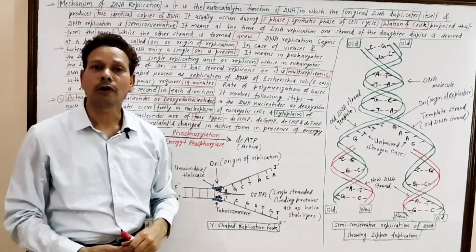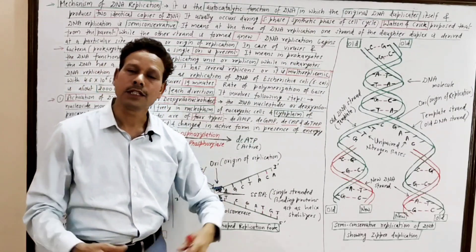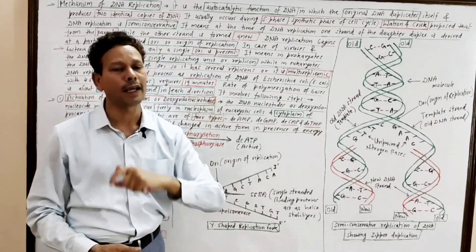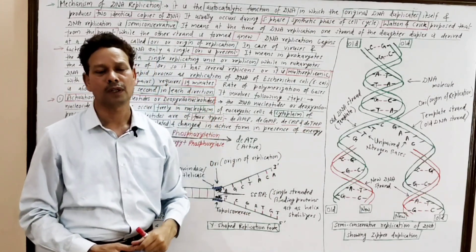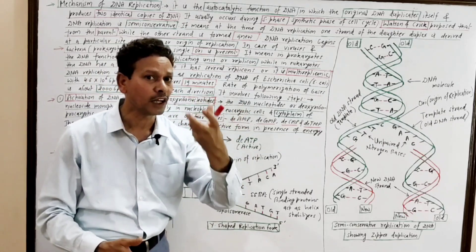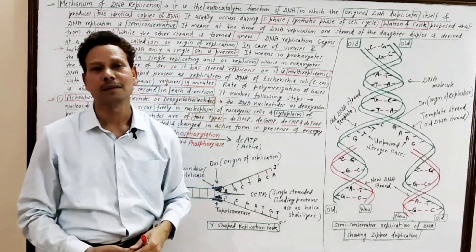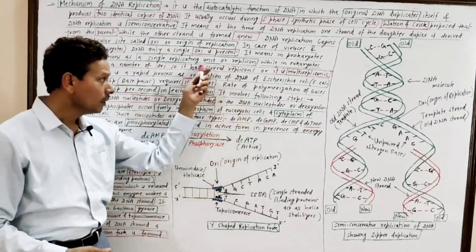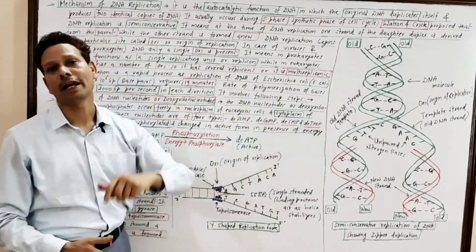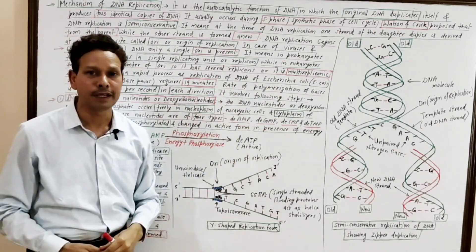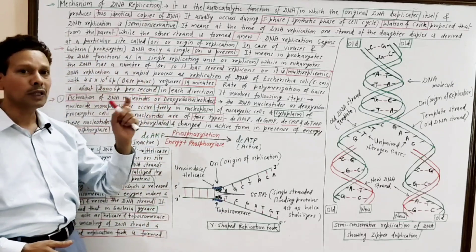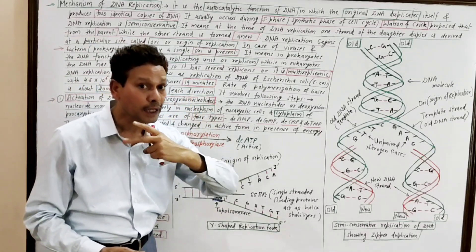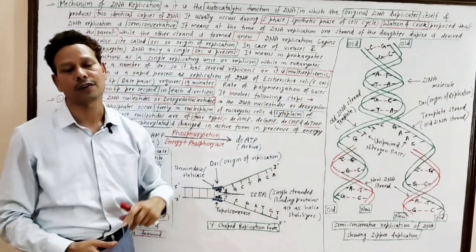The replication process is a very rapid, very fast process. For example, in E. coli, the entire DNA replication requires only 19 minutes.